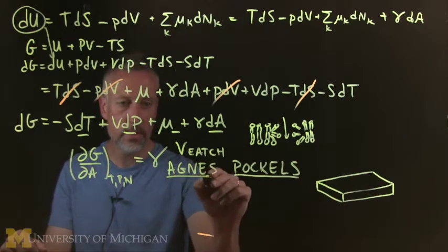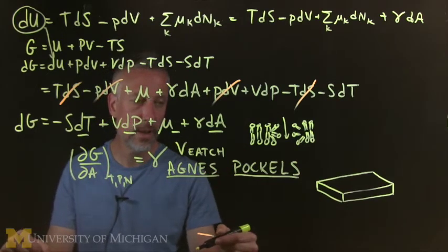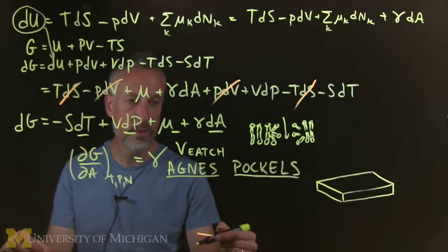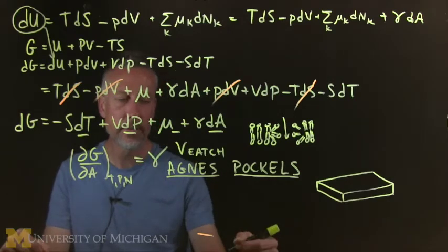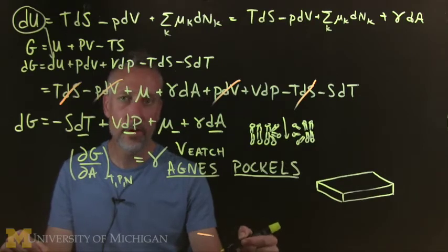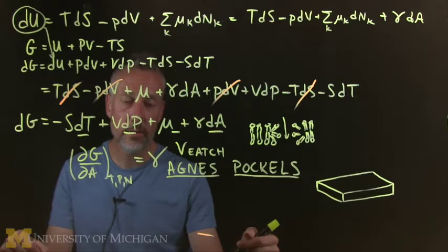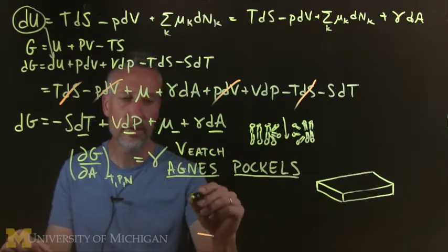And so it turns out it's sort of the opposite of bittersweet. It's bitter and then it gets sweet. So Agnes Pockels was very smart as you might have guessed. When she was young, her parents got sick, and rather than go to university like she wanted to do to get a PhD, she took care of her parents. And it was the 19th century. She was born in 1862.